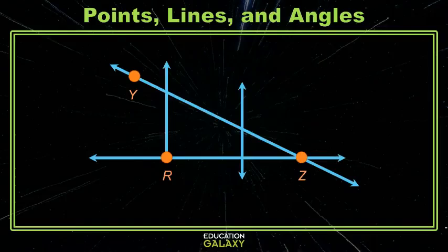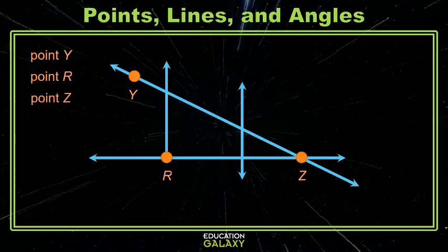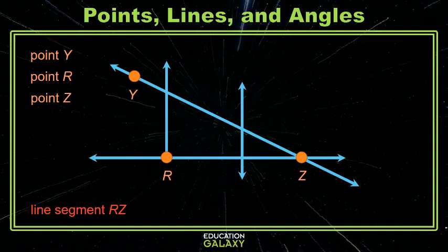Let's look at this image and see if we can pick out some of our new terms. Right away I see some points labeled — point Y and R and Z. Do you see a line segment? How about the line segment RZ, which identifies the points R and Z and all of the points in between.